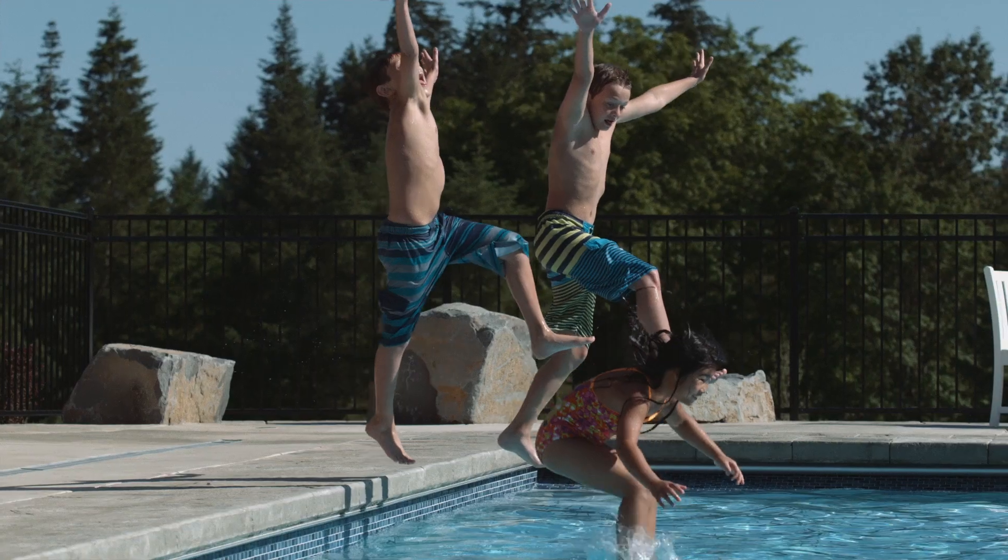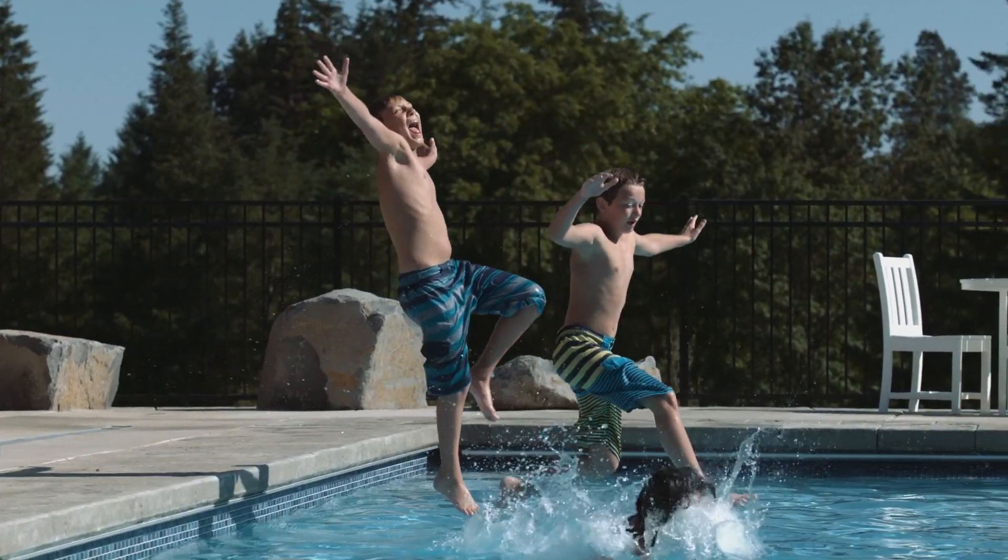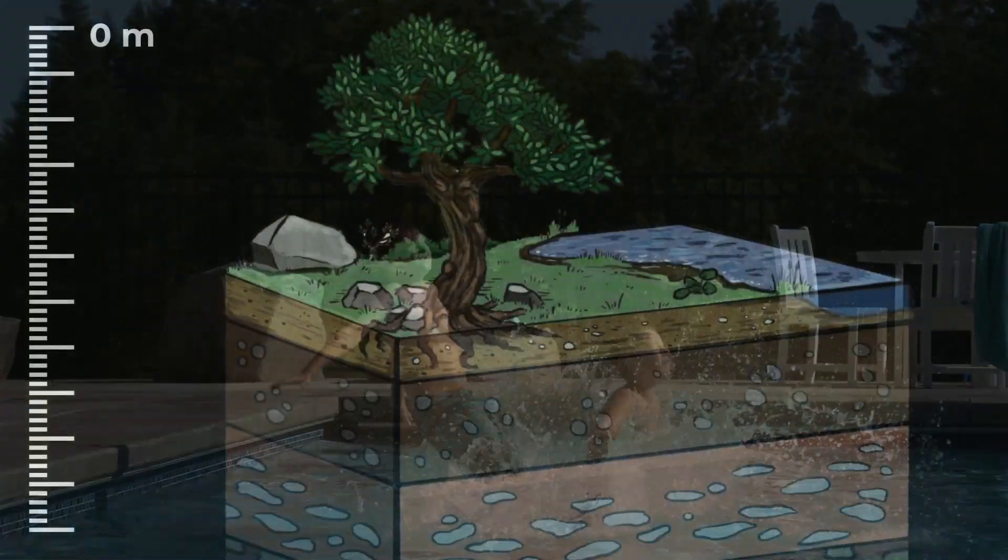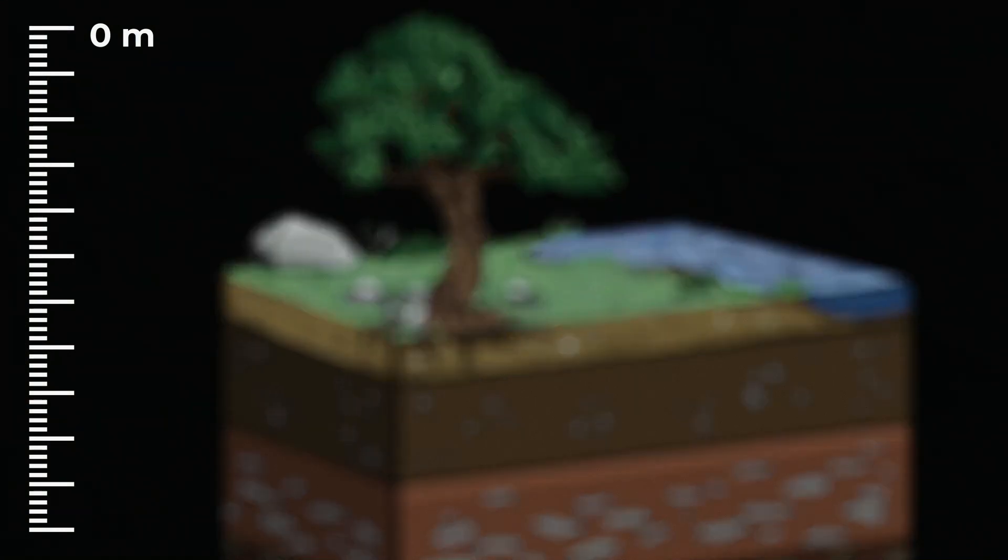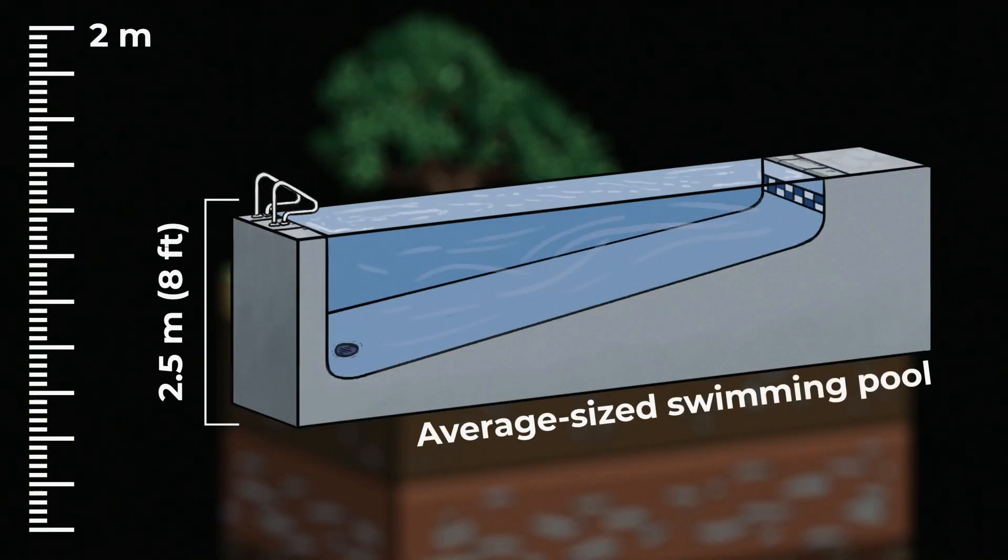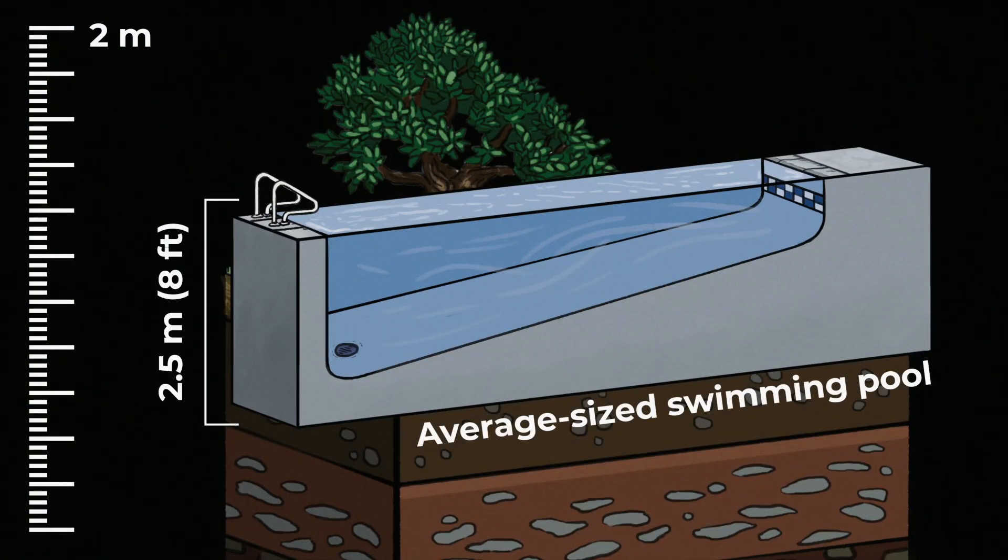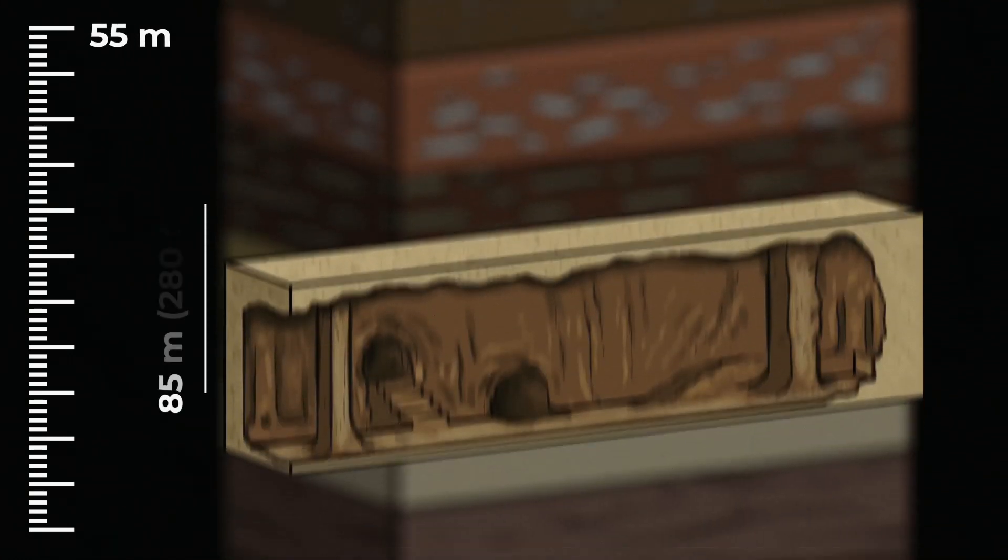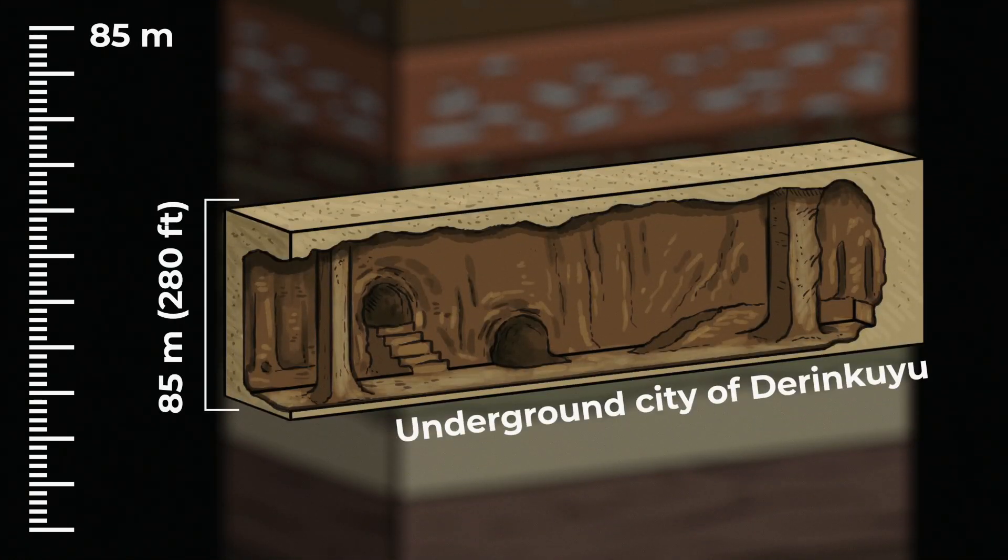If you ever went swimming on a hot summer day and touched the bottom of the deep end of the pool, you went about two and a half meters or eight feet deep. In Turkey, there is an ancient underground city called Derinkuyu, residing at a depth of 85 meters or about 280 feet.